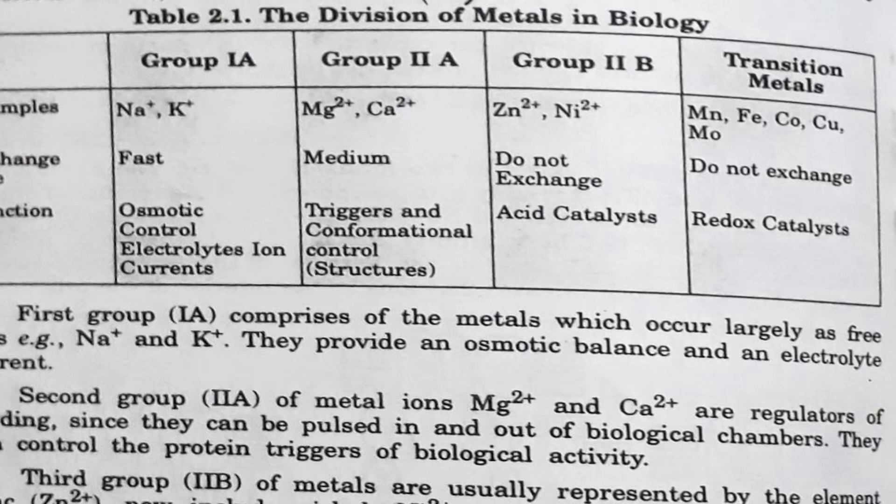Magnesium and potassium are concentrated inside cells. Magnesium forms a complex with ATP and is required for most of the enzymatic reactions involving ATP within the cell. Under normal dietary conditions, a healthy individual seldom suffers from deficiency of sodium, potassium, and chlorine.